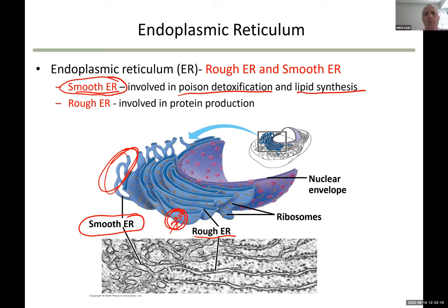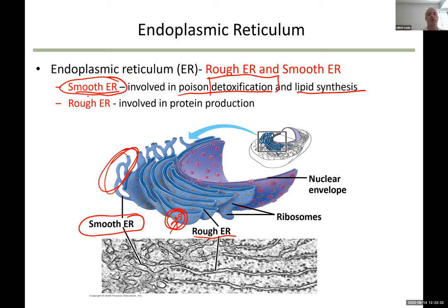Which organ in the body would contain a lot of smooth ER? If you thought about the liver, you are correct — the liver is involved in body detoxification. Smooth ER is involved in detoxification and making lipids.